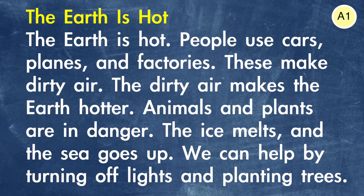So this text is the CEFR A1 level — the complete beginner level. Our title is 'The Earth is Hot.' The earth is hot. People use cars, planes and factories. These make dirty air. The dirty air makes the earth hotter. Animals and plants are in danger. The ice melts and the sea goes up. We can help by turning off lights and planting trees.